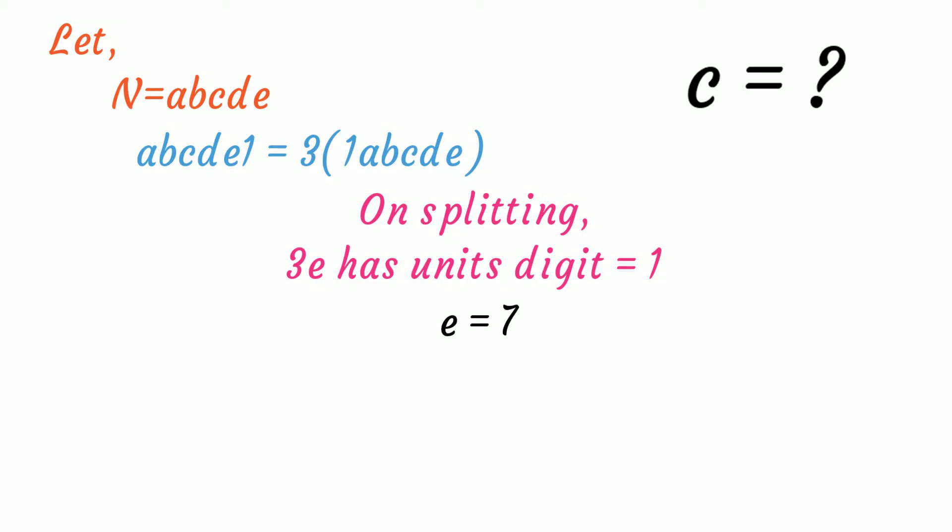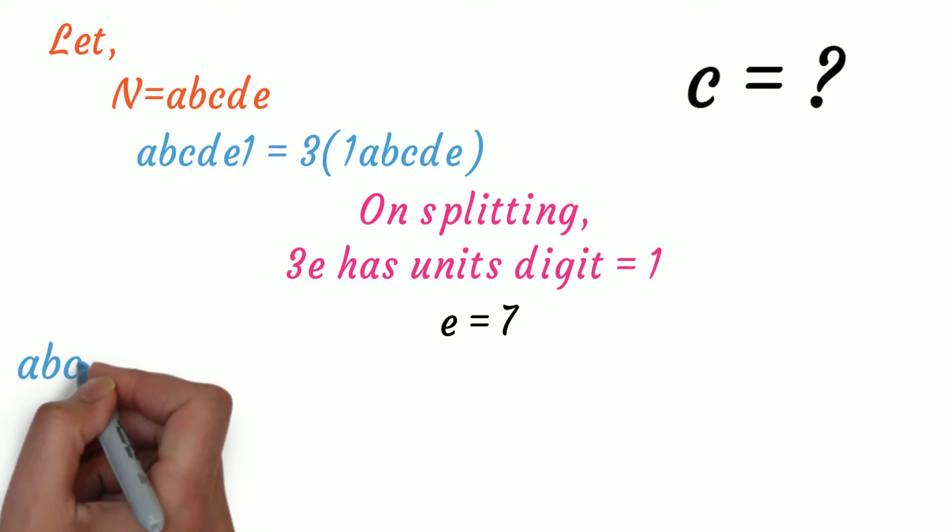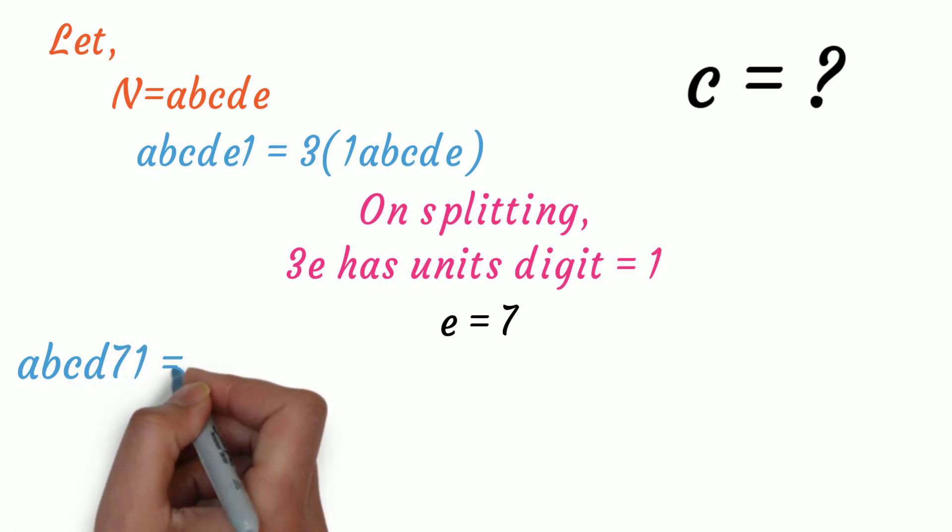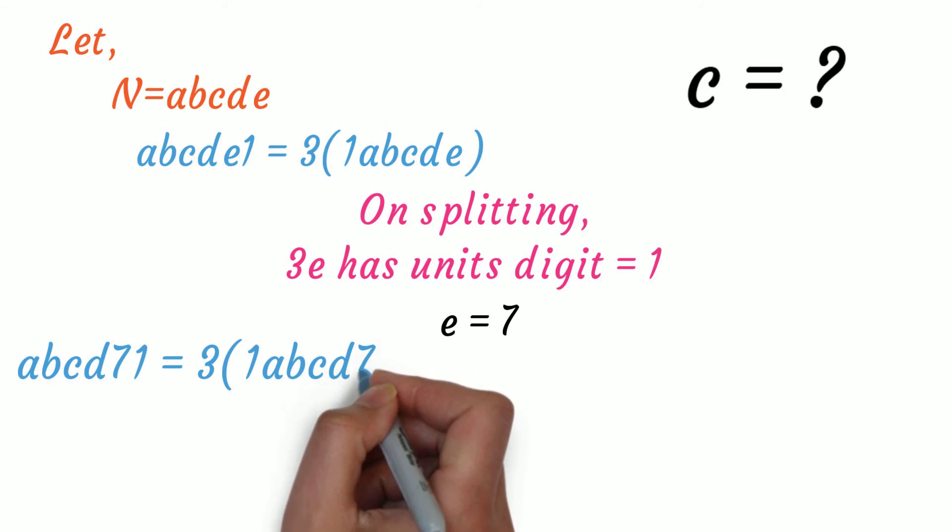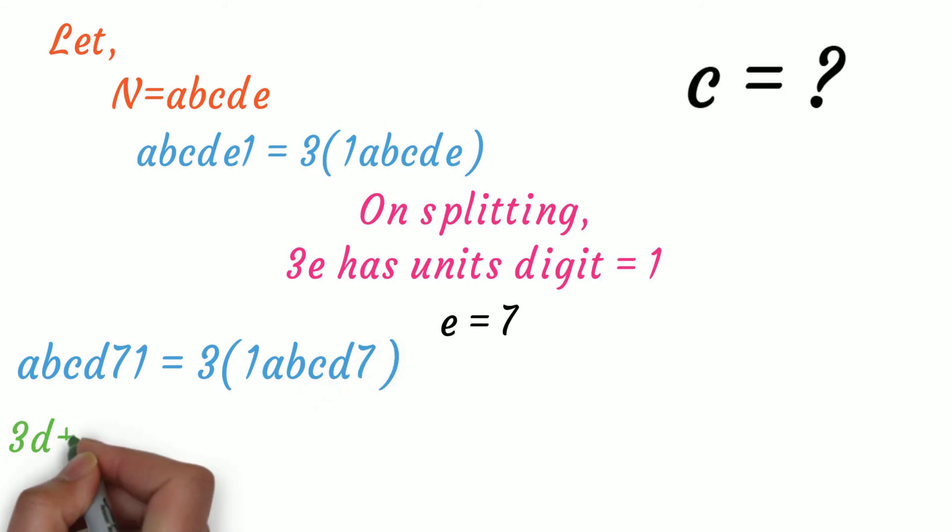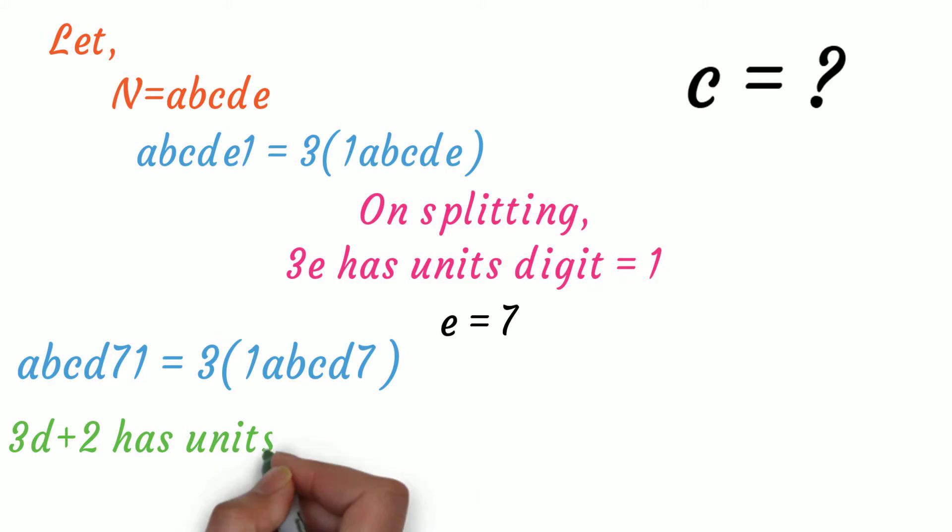So, substituting it back, we get abcd71 equals 3 into 1abcd7. Now, 3 into d plus 2, 2 is the carryover from 21, must have unit digit 7. And once again, d equal to 5 is the only case satisfying 3d plus 2 giving a unit digit of 7.